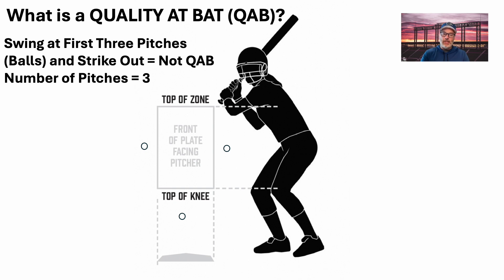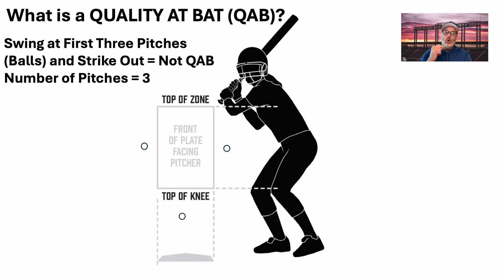It's also not a quality at bat because your teammates only saw three pitches. The more pitches we are able to see, the better we are prepared for getting a hit or making contact — and when our teammates get up, the better they are prepared for making contact and getting a hit.